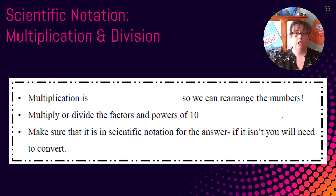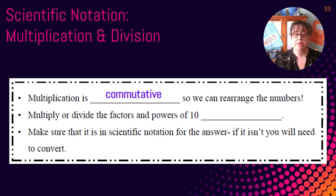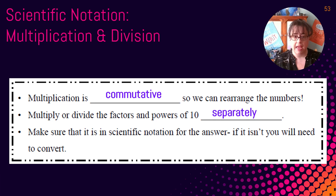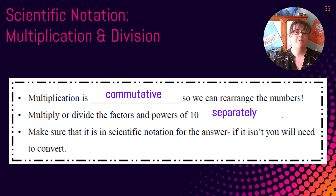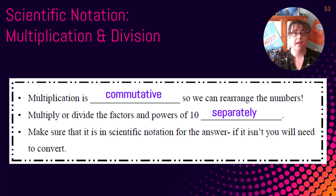We are going to begin today by looking at some rules about multiplication and division and how they relate to scientific notation. We need to remember that multiplication is commutative, which means we can rearrange the numbers. That means we can multiply or divide the factors and the powers of 10 separately. We also need to make sure our answer is in scientific notation — if it's not, we'll need to convert it, either through standard notation or using conversion rules.